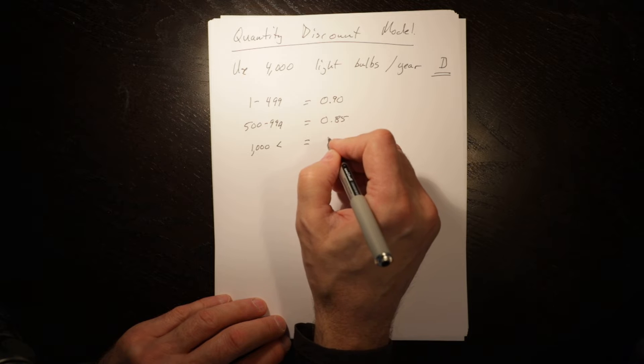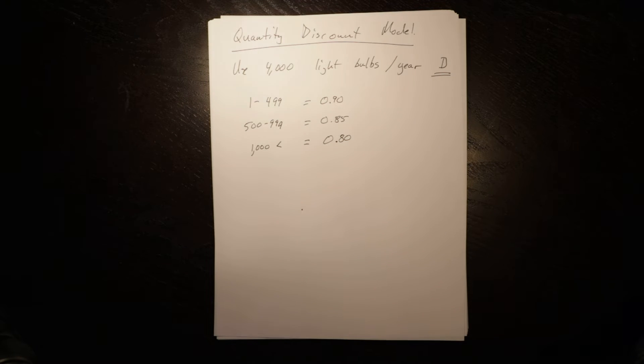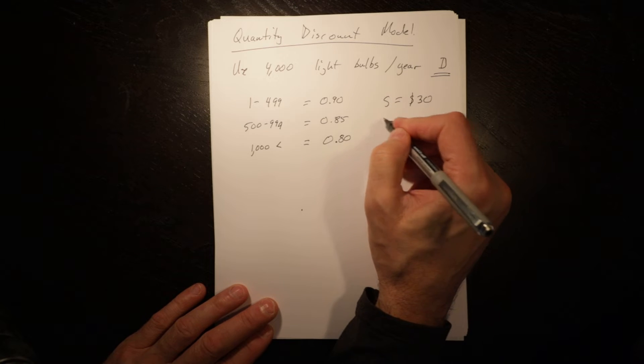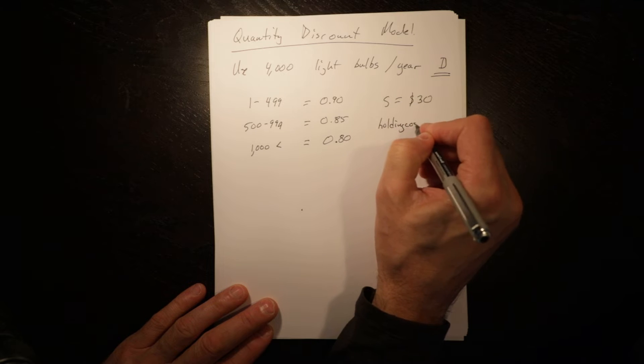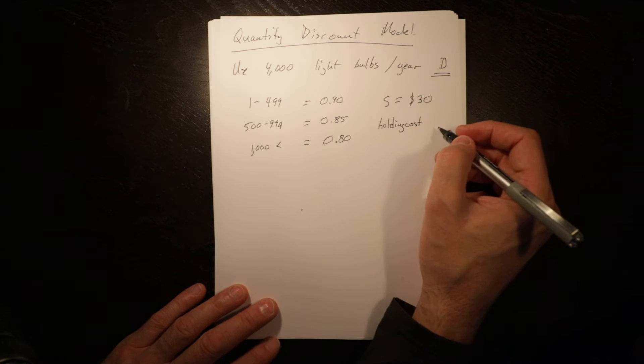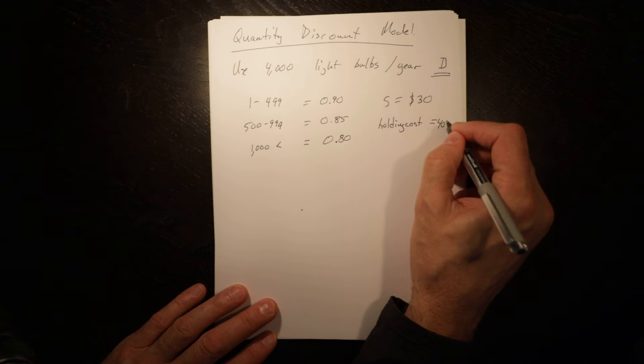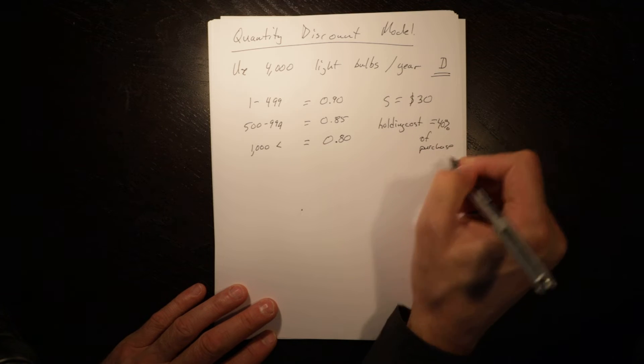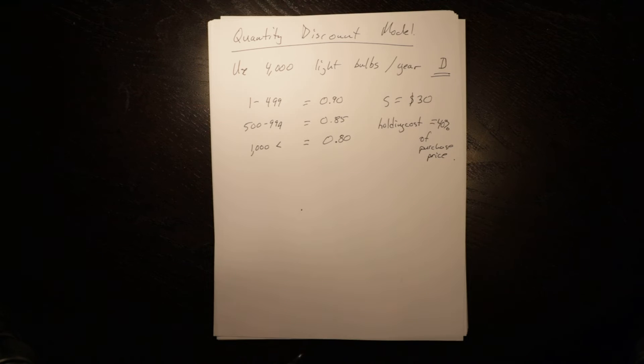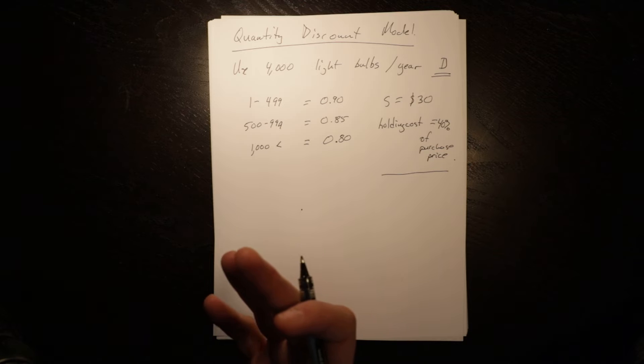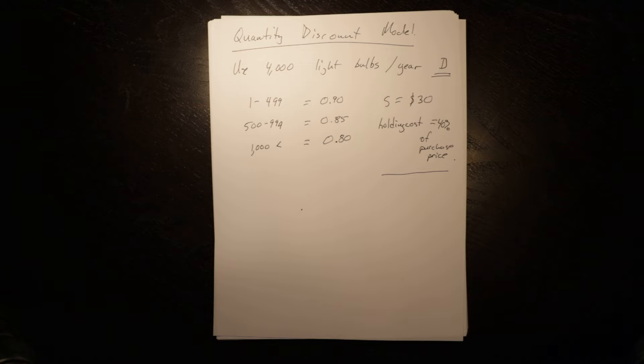What is the optimal order quantity in this circumstance? You need to know that the setup cost is $30 per order, and the holding cost is equal to 40% of purchase price. In this case, it's not a fixed number as we've seen in other examples; it's a percentage of the purchase price, which means you need to do one additional calculation.